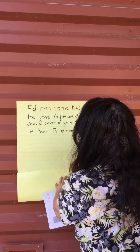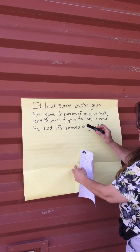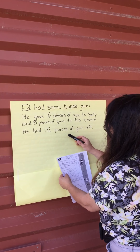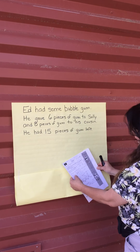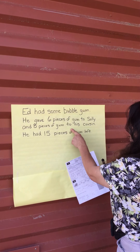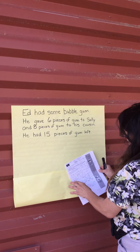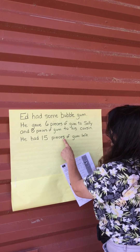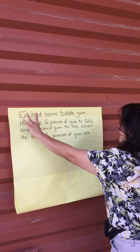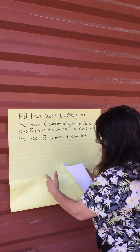It says, Ed has some bubble gum. He gave six pieces of gum to Sally and eight pieces of gum to his cousin. So he had 15 pieces of gum left. We're going to do this part, then we're going to do that second part.